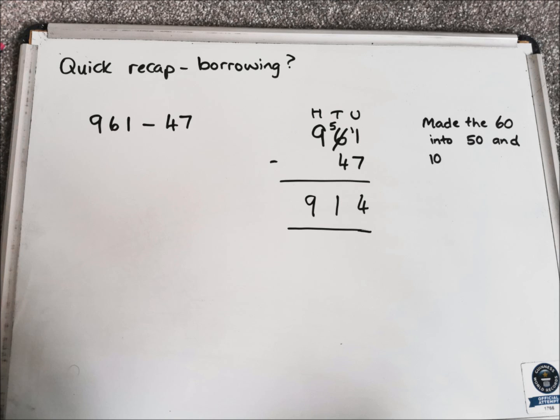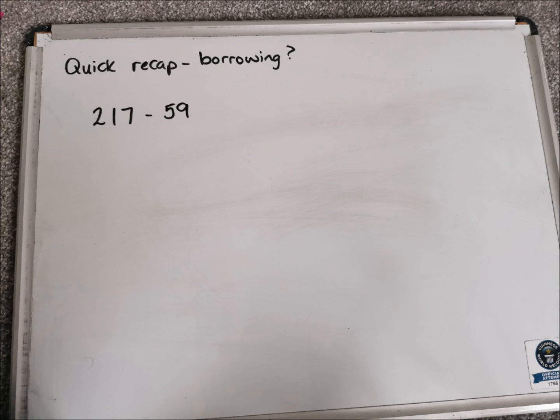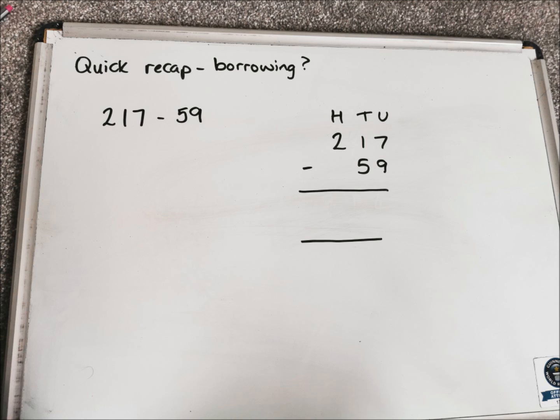Let's have a look at another example. So here we have 217 take away 59. So again, just laying out your chimney sum, something like that, nice and neat. Starting in the units column, again, we've got 7 take away 9, which is hard to do without borrowing.